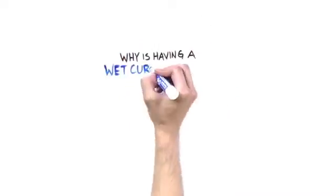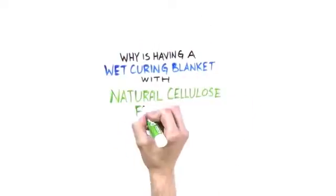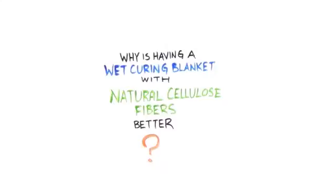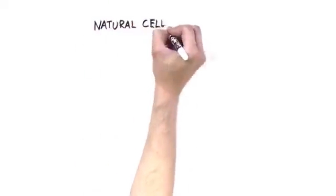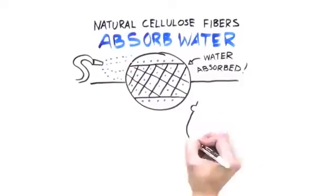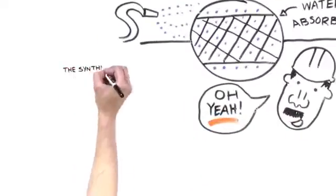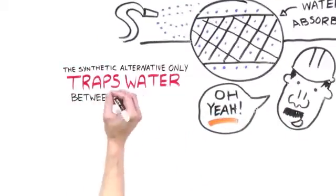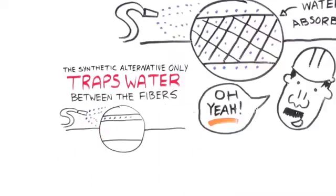Why is having a wet curing blanket with natural cellulose fibers better? Because natural cellulose fibers absorb water, the synthetic alternative only traps water between the fibers creating the need for re-wetting.